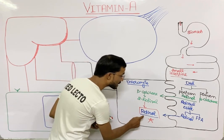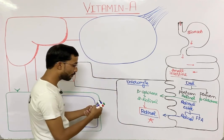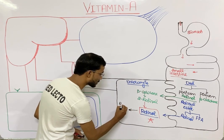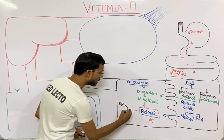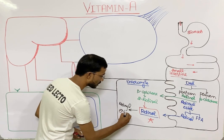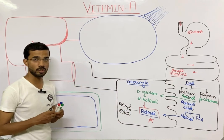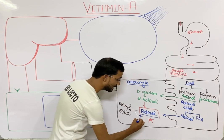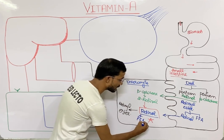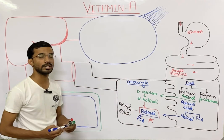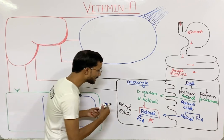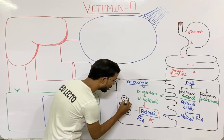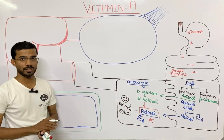This retinol will then convert into retinol ester by adding free fatty acids. So retinol combined with free fatty acids forms retinol ester inside the enterocytes.